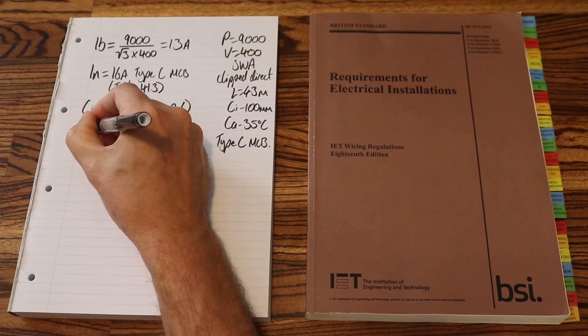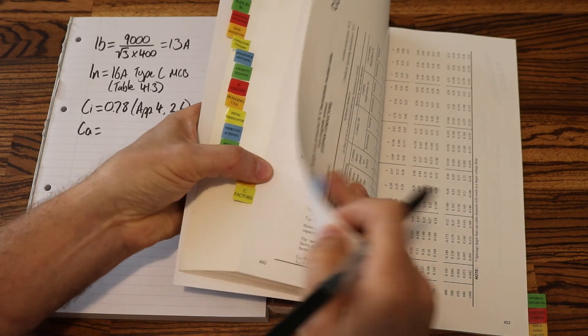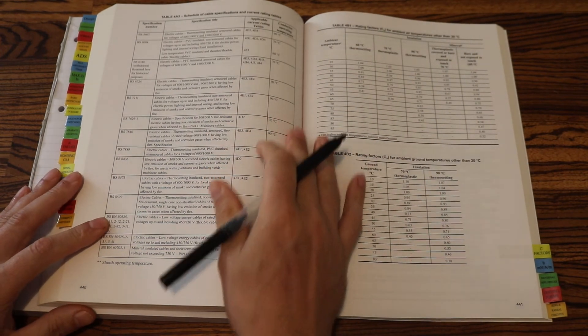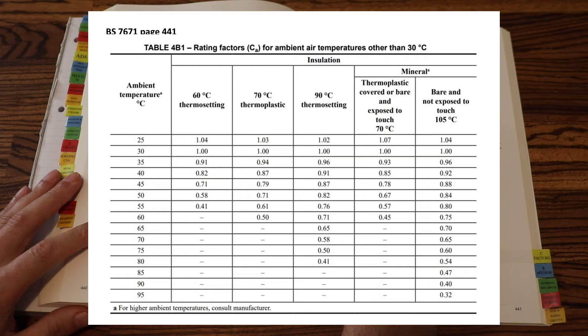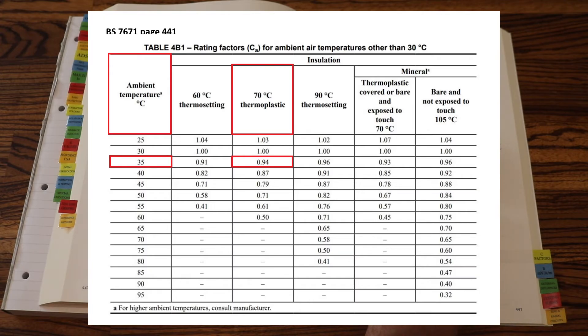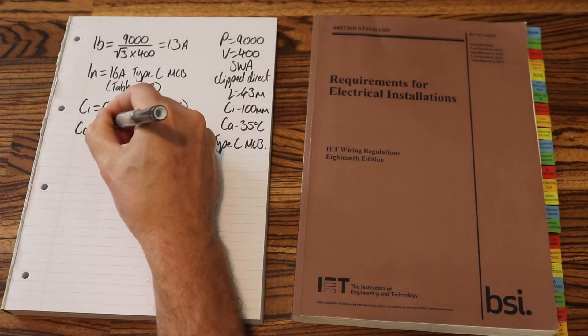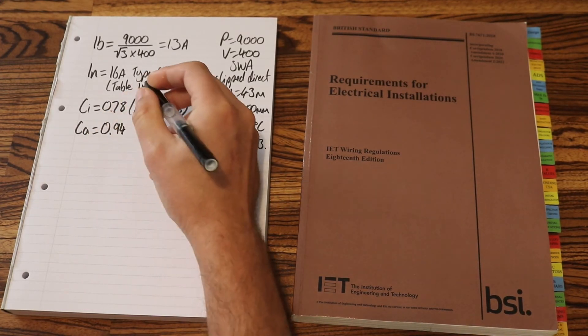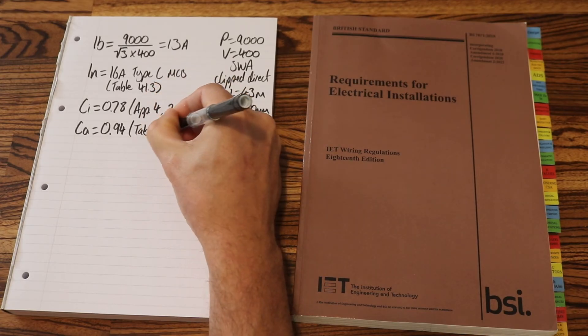Our next C factor was CA. Again, we're in Appendix 4. Now I'm looking at page 441, the top table, Table 4B1. Rating factor CA for ambient air temperature. Our ambient air temperature for this question was 35 degrees. So go down column 1, 35 degrees, and over to column 3, which was 70 degree thermoplastic cable. And we find our derating factor 0.94.